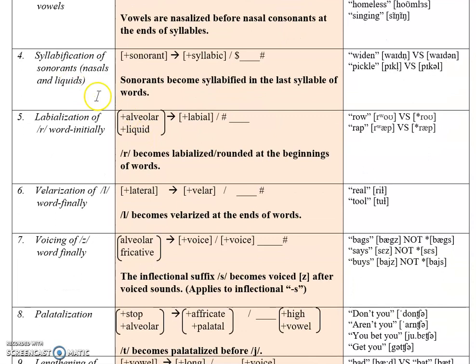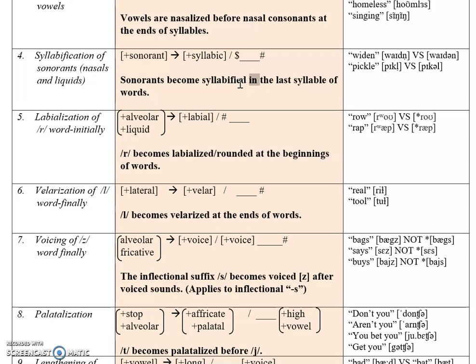Syllabification of sonorants: nasal and liquid sonorant sounds, which have an almost vowel-like quality, become syllabic — they turn into their own syllables — in the position after another syllable but at the end of a word. Sonorants become syllabified after other syllables at the ends of words.